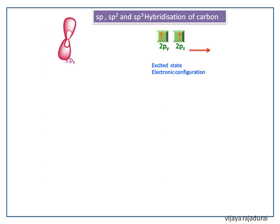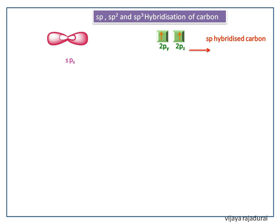After hybridization carbon atom has two SP hybridized orbitals and two unhybridized P orbitals. The angle between two SP hybridized orbitals is 180 degrees.